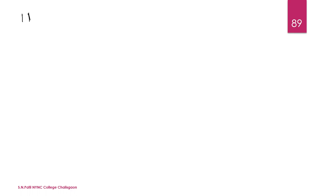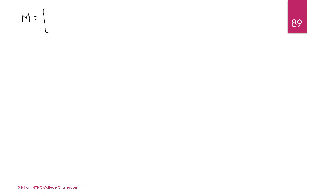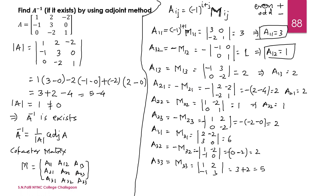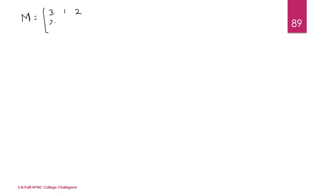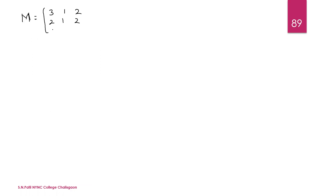Now the cofactor matrix M can be written as: first row 3, 1, 2; second row 2, 1, 2; and third row 6, 2, 5.